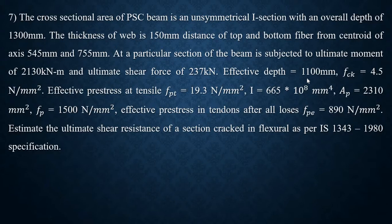Effective depth is equal to 1100 mm, fck = 4.5 N/mm². Effective prestress at tensile fpt is equal to 19.3 N/mm². I = 665 × 10⁸ mm⁴. Ap = 2310 mm². fp = 1500 N/mm². Effective prestress in tendons after all losses fpe is equal to 890 N/mm². Estimate the ultimate shear resistance of a section cracked in flexure as per IS 1343-1980 specification.